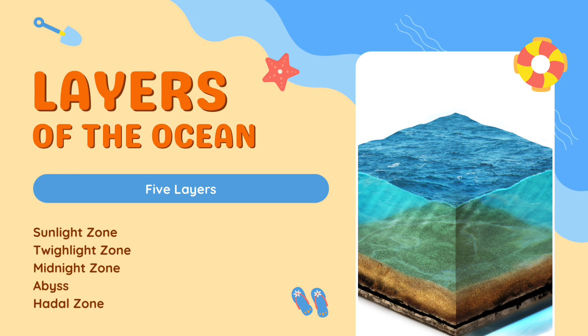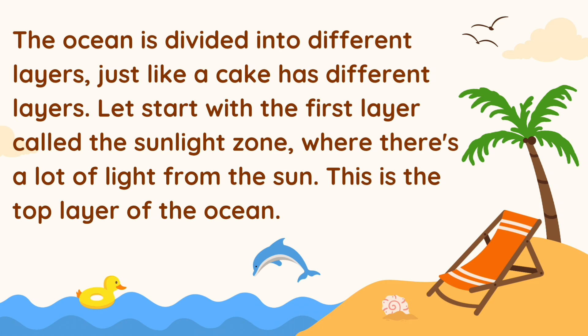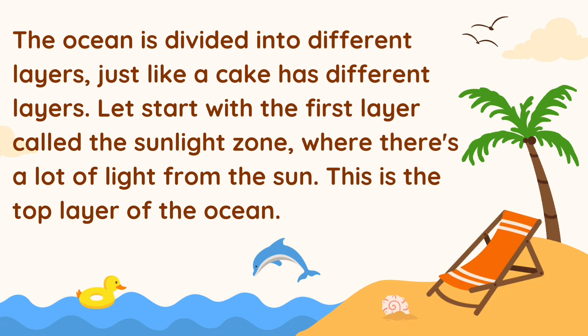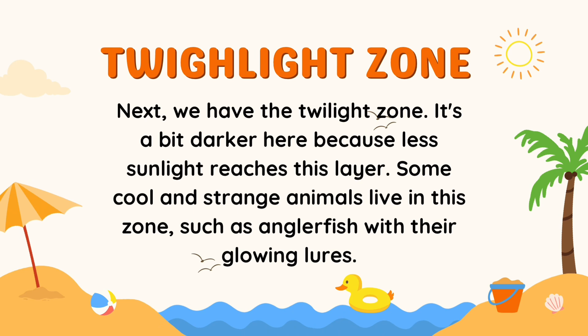An overview of the layers of the ocean: there are five layers — the sunlight zone, twilight zone, midnight zone, the abyss, and then finally the hadal zone. The ocean is divided into different layers just like a cake has different layers. Let's start with the first layer called the sunlight zone, where there's a lot of light from the sun. This is the top layer of the ocean.